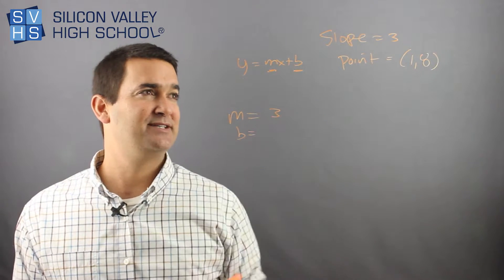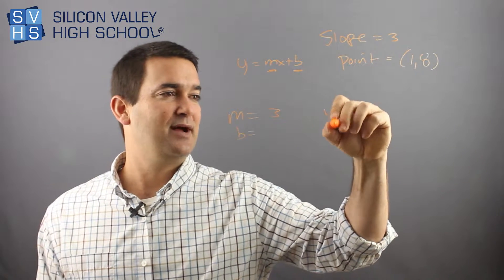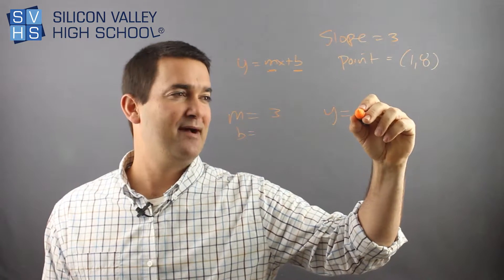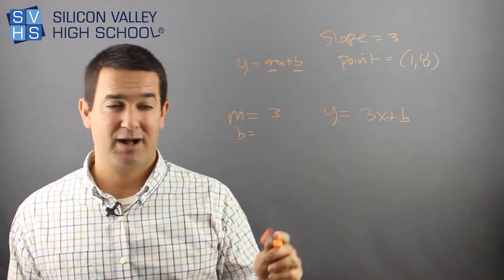Right now we're done with the slope. They just gave it to me. So that's actually a huge perk. So I'm going to plug my slope back into this. Y equals, instead of m, now I have three x plus b. And I'm halfway done, right? I'm almost done with this problem.